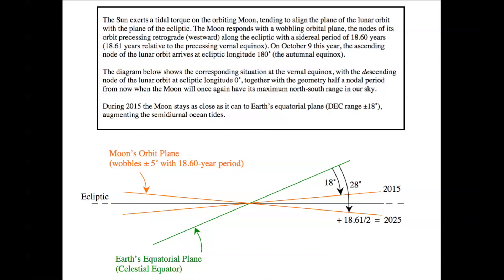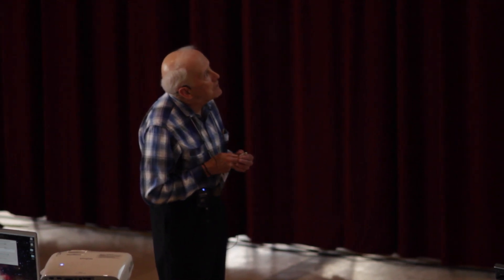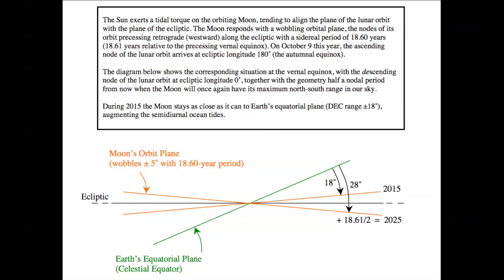And it also shows the geometry half a nodal period from now. If you add half of the 18.61 year period to 2015, you come to 2025. And in that year, the lunar orbit will be 5 degrees the other way to the ecliptic. And you can see what that does to the lunar orbit relative to the celestial equator. This year, 2015, it's only 18 degrees off, whereas half of that nodal period later, it's up to 28. So during 2015, the moon stays as close as it can to Earth's equatorial plane. The declination range is plus or minus 18 degrees. And that augments the semi-diurnal ocean tides.